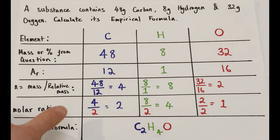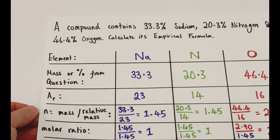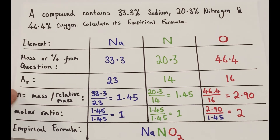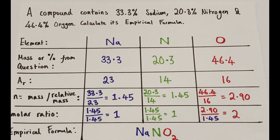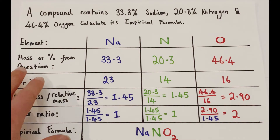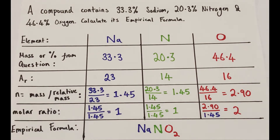Here's a second example using percentages, showing they work in exactly the same way. A compound contains 33.3% sodium, 20.3% nitrogen, and 46.4% oxygen — calculate the empirical formula. Exactly the same grid method is used. The percentage values are written down as numbers, because they are percentages by mass and work the same way as mass in these questions.